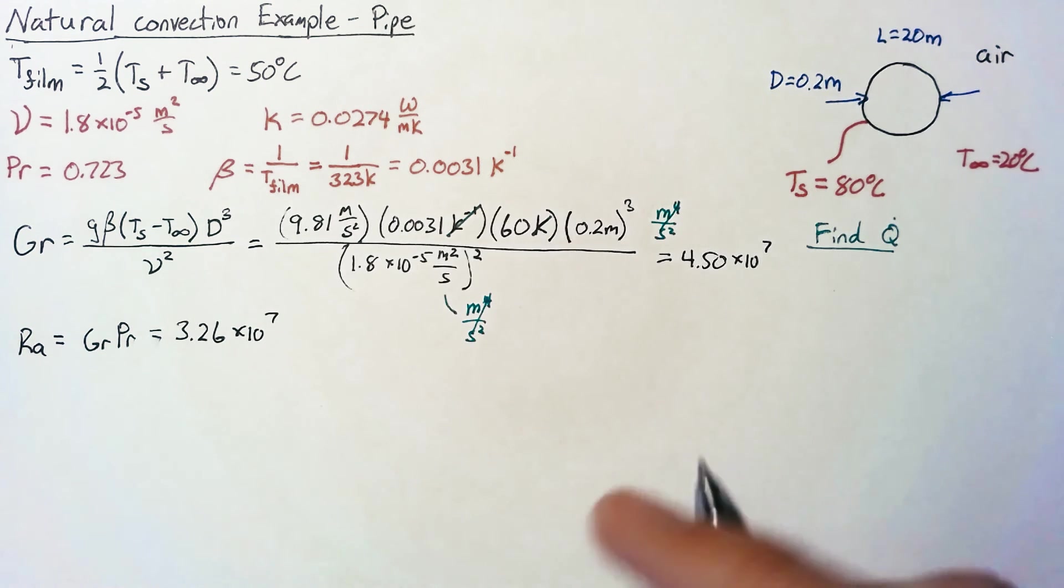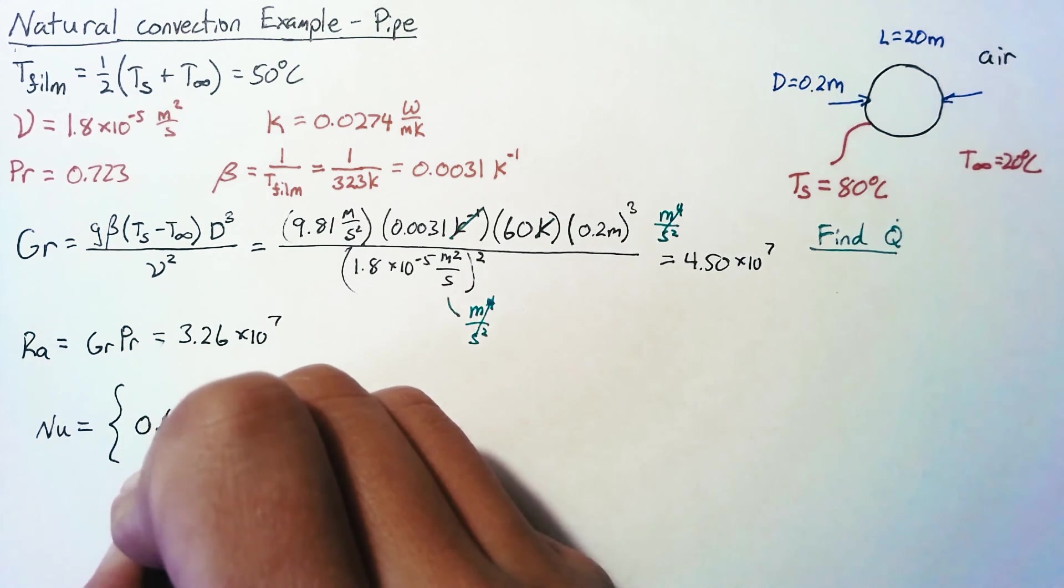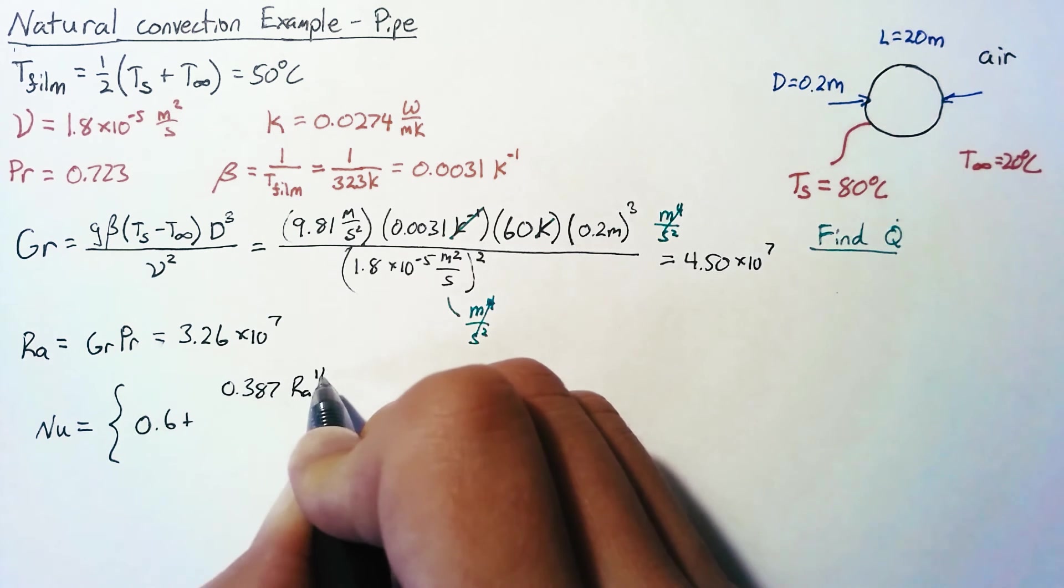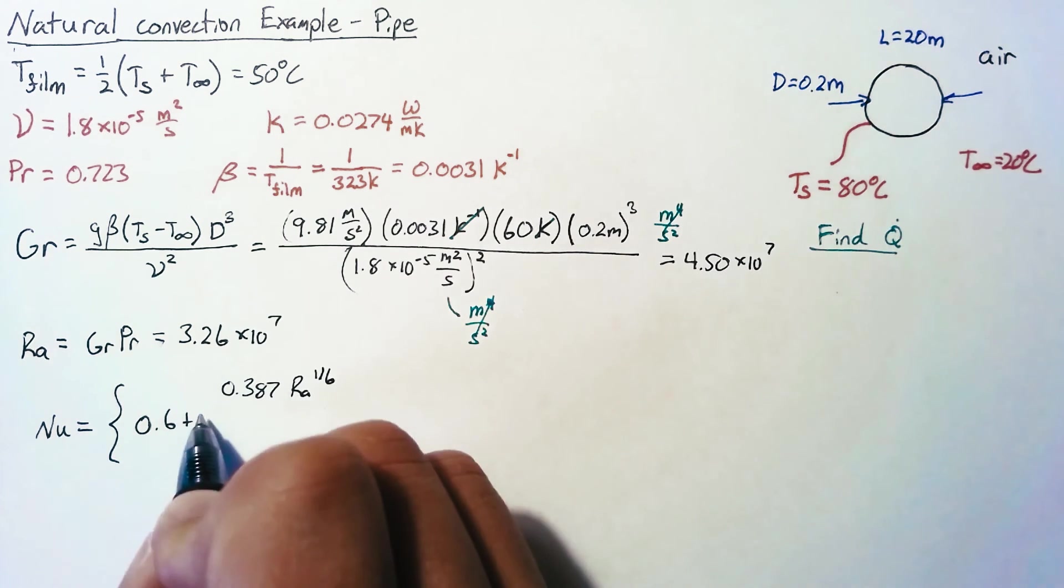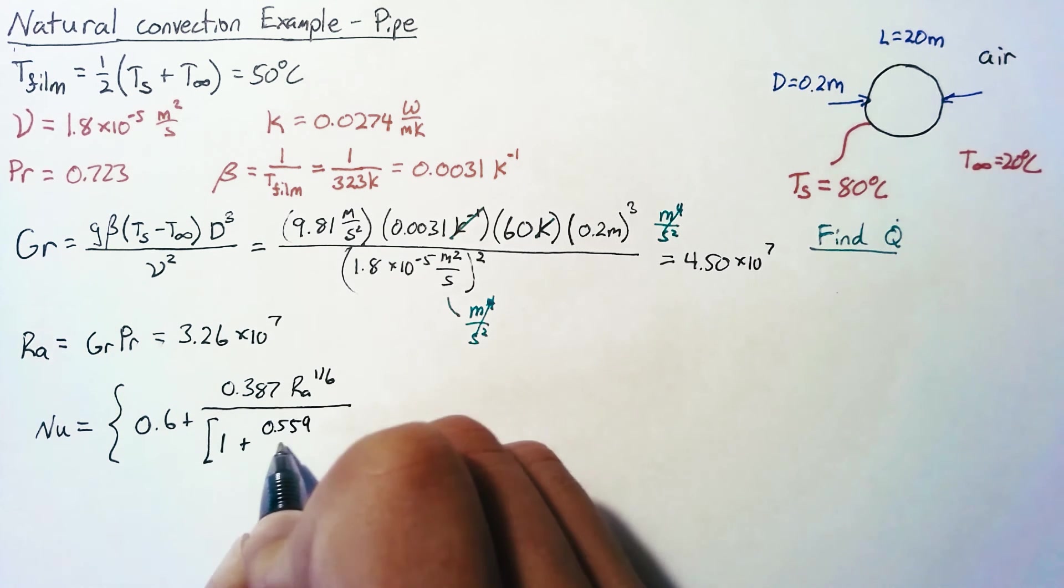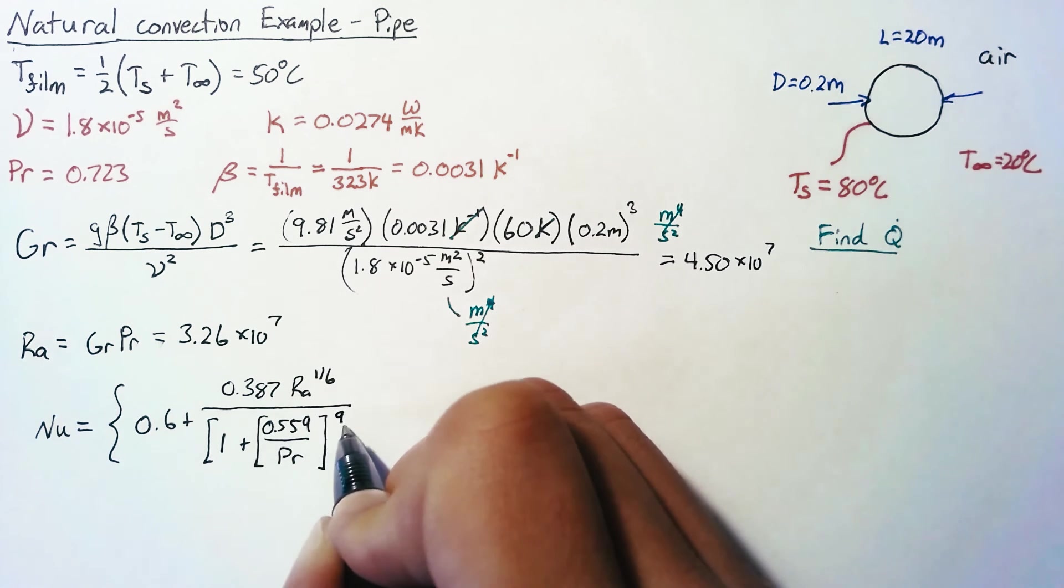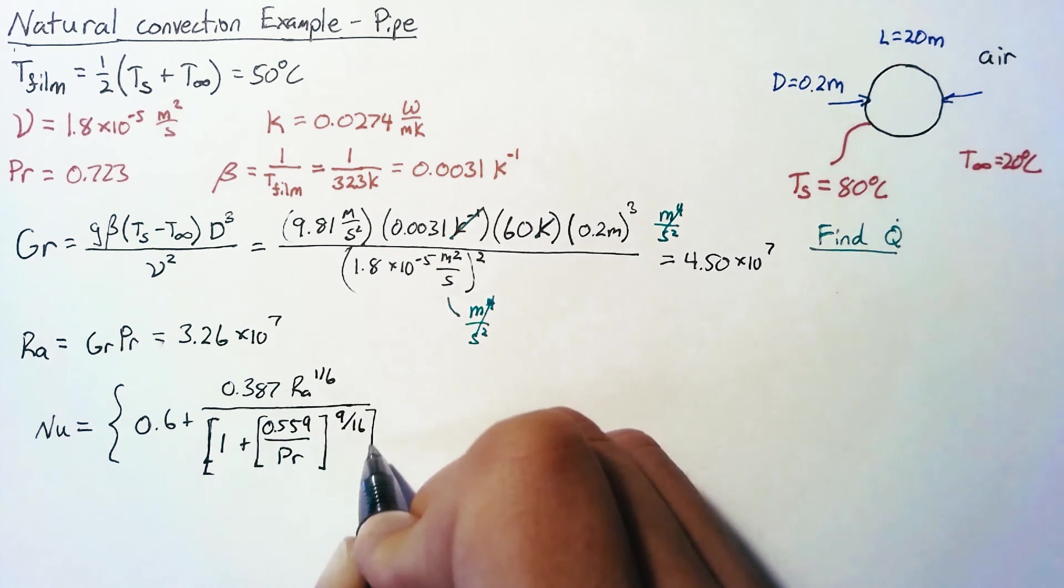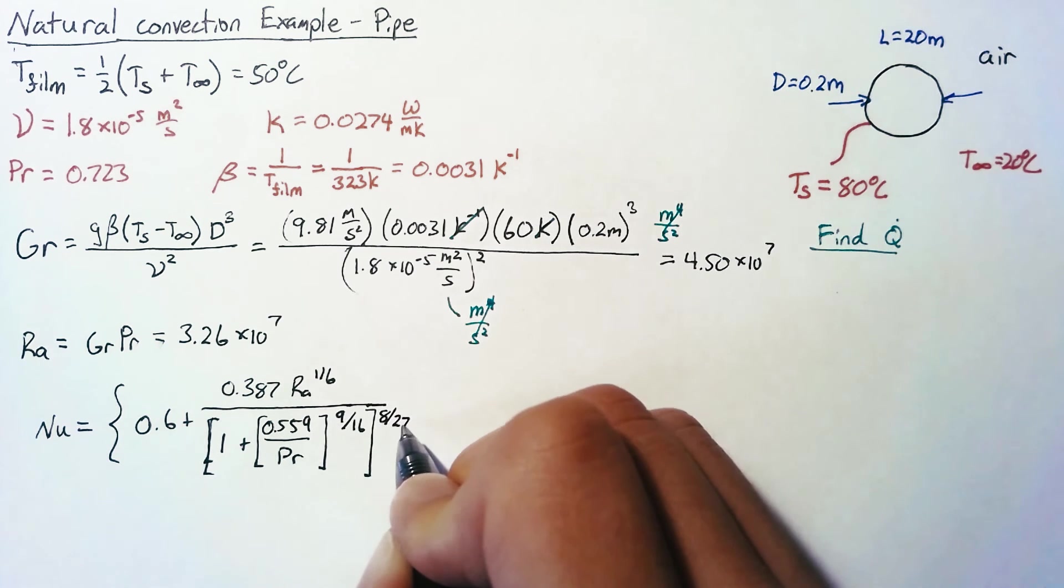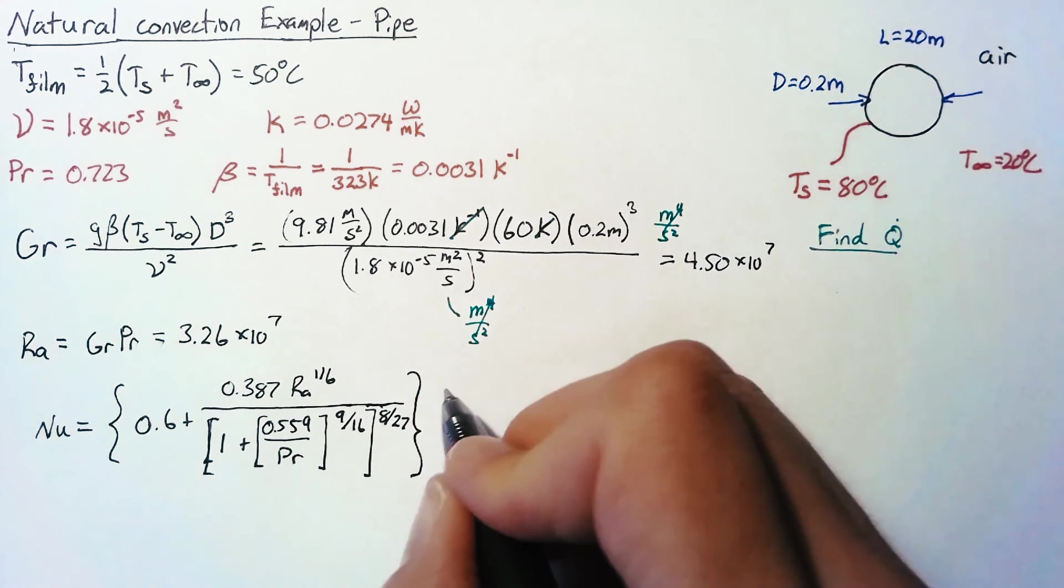Now the Nusselt number is quite a bit more complicated. So the equation we have is 0.6 plus 0.387, Rayleigh number to the one sixth. Just that piece is going to be divided by 1 plus 0.559 over the Prandtl number. That piece is going to be to the nine sixteenths power. And then finally, that entire denominator is going to be to the 8/27ths power.